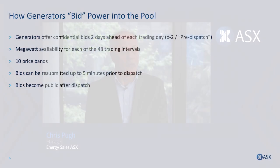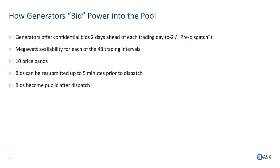Generators offer amounts of capacity into the market up to two days in advance in ten price bands across 48 half-hour intervals across the day. This is called bidding in power. This is confidential until after the dispatch, then it becomes public.